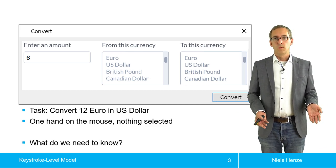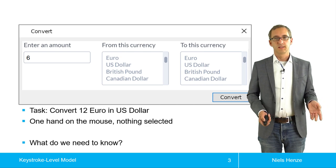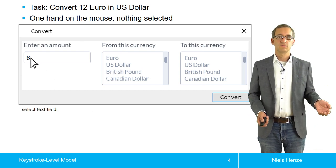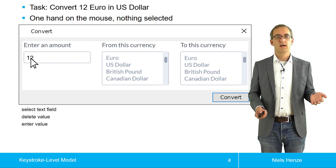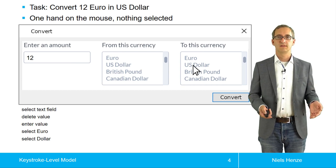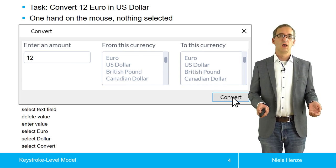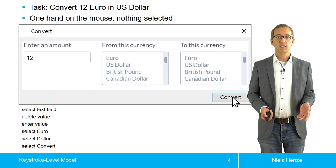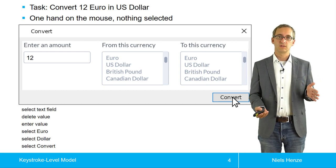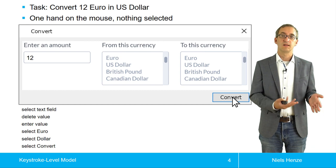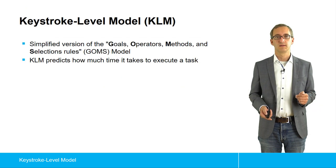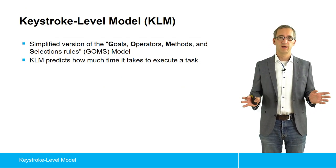We need to know the task sequence. The first thing is I select this text field, then I delete the old value, I enter a new one, I point at euro, I point at US dollar, and then finally I point and click on convert. Then the user is basically done. What you could do now is figure out for all these operations how long does it actually take. An educated guess is fine, but it would be nicer if we have actual values that we can just plug in. This is what KLM provides us with.